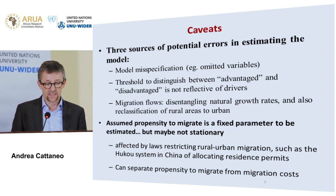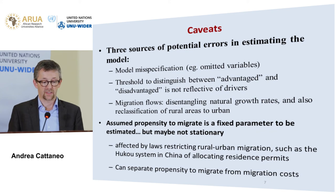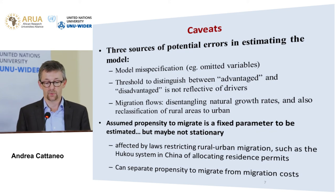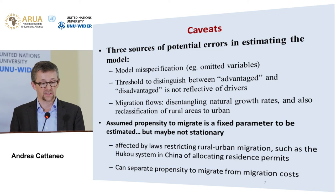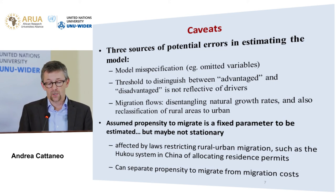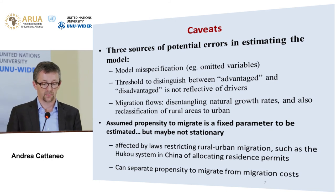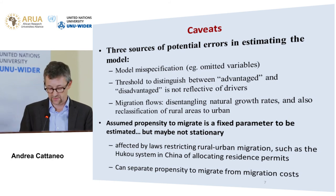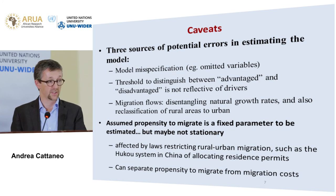Additionally, we assume the propensity to migrate is a fixed parameter to be estimated, but it may not be stationary — it can be affected by laws restricting rural-urban migration, such as the hukou system in China. It is straightforward to separate propensity to migrate from migration costs, but this is something we haven't yet done.